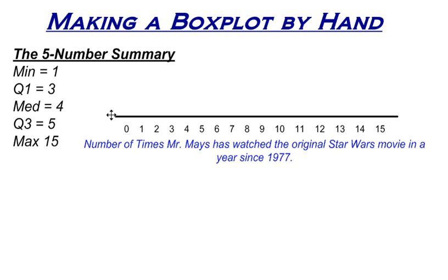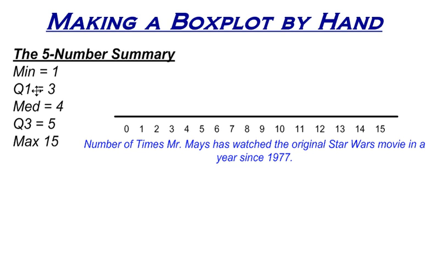I've got a number line set up here, and it goes from zero all the way to 15. The label reads: the number of times Mr. Maze has watched the original Star Wars movie in a year since 1977. So I've got all my labels — this is pretty much the title and label at the same time. The first thing I do is mark where the first quartile, the median, and the third quartile go on the number line.